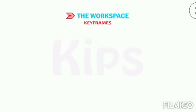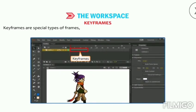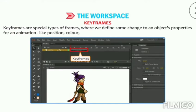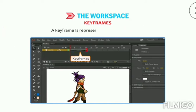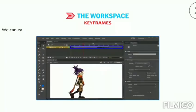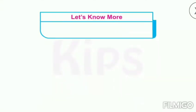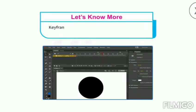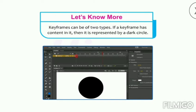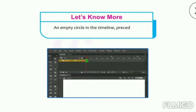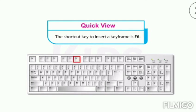Keyframes are special types of frames where we define changes to an object's properties for an animation, like position, color, shape, etc. A keyframe is represented by a solid black dot. Keyframes can be of two types: if a keyframe has content, it is represented by a dark circle; an empty circle represents a blank keyframe. The shortcut key to insert a keyframe is F6.